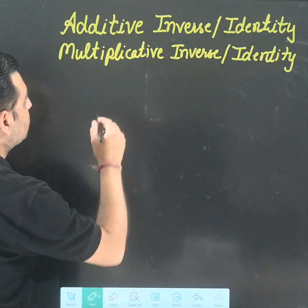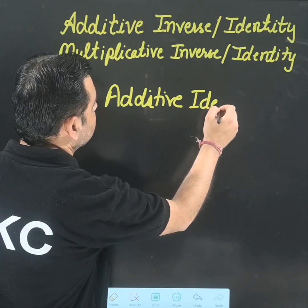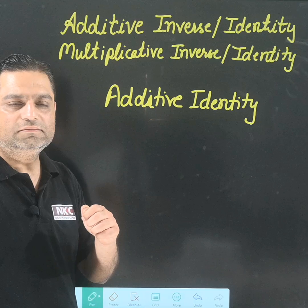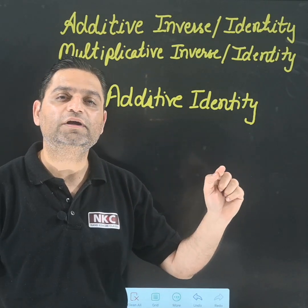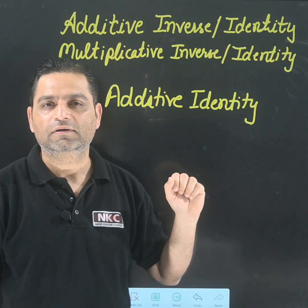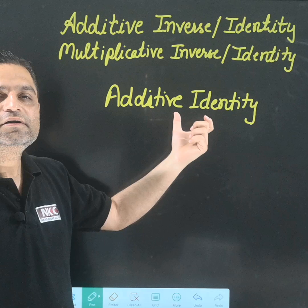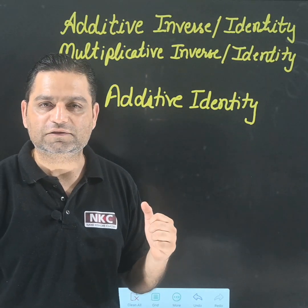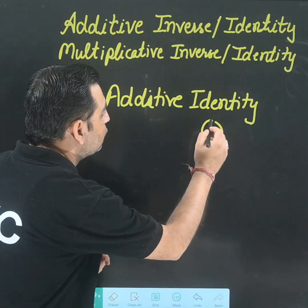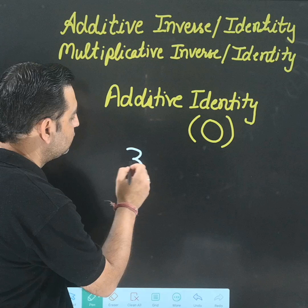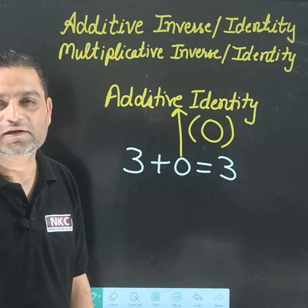Let us start with additive identity. In additive identity, what should I add so that there is no change in the result? A helpful way to remember: nobody can change my identity. Additive identity means even though I add something, my identity is not getting changed — and that can only be done by 0. So 0 is known as the additive identity. For example, if 3 is there and you add 0, the result is still 3.